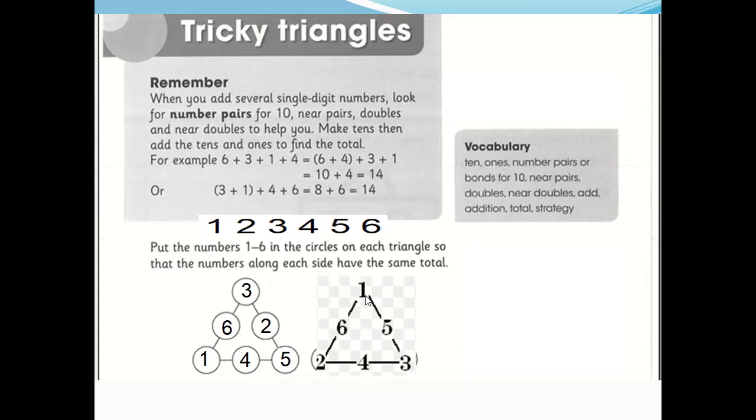For example, 6 plus 1, 7. 7 plus 2, 9. Now, we need 9 for each line, for each side. 4 plus 2, 8. 8 plus 3, 9. Like this. 5, 3, 8. 8 plus 1, 9.